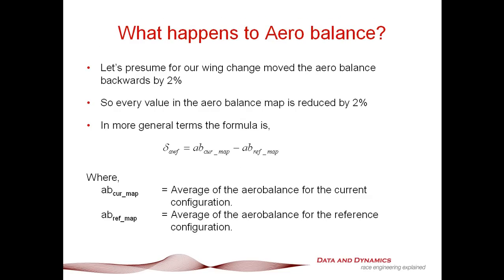But the question has to be asked: what about the aero balance? Let's presume for our wing change we've moved the aero balance backwards by 2%. All we do is reduce every aero balance table in the map by 2%. In more general terms, you take the average of the new aero configuration and the average of the reference configuration, and delta AWF — how you offset the aero map — is simply the aero balance of the current map minus the aero balance of the reference map. In reality, for small changes it doesn't change all that much.